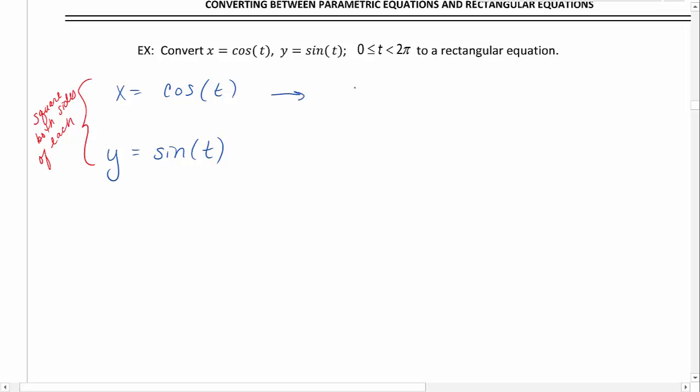Our first equation turns into x squared equals cosine squared of t. And our second equation becomes y squared equals sine squared of t. Next, we are going to add these equations down.